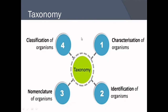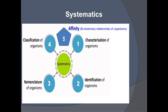With the help of a pictorial representation, you can learn about taxonomy: characterization of the organism, then identification, then nomenclature, and finally classification of organisms into different classes or groups. Systematics includes all the characteristics discussed in taxonomy plus one additional aspect — affinity — which is the evolutionary relationship among organisms.